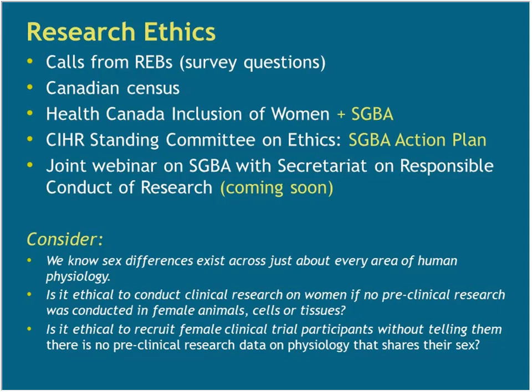The Canadian census had a similar issue — I believe they asked 'What is your sex?' but only had male, female, and other, and there were many complaints. Health Canada has inclusion of women plus SGBA guidelines. The CIHR Standing Committee on Ethics approved the SGBA Action Plan, and we're planning a webinar with the Secretariat on Responsible Conduct of Research on how to adjust advice interpreting the Tri-Council Policy Statement on Ethics. If we know there are sex differences across virtually every area of human physiology, is it ethical to conduct clinical research on women if no preclinical research was conducted in female animals, cells, or tissues?